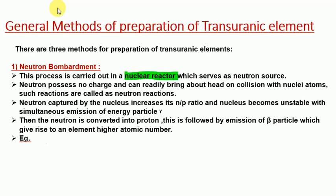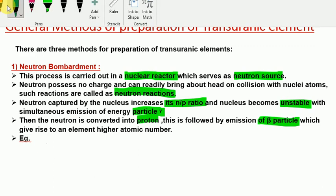The nuclear reactor itself serves as a neutron source. Neutrons have no charge and can readily bring about head-on collisions with nuclei; such reactions are called neutron reactions. Neutron captured by the nucleus increases its neutron-to-proton ratio and the nucleus becomes unstable, with simultaneous emission of gamma energy. The neutron is then converted into a proton, followed by emission of a beta particle, giving rise to an element of higher atomic number.